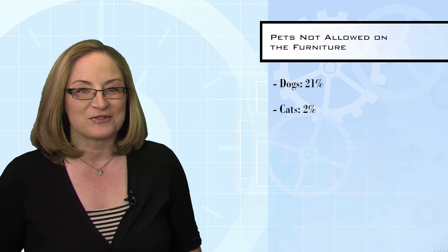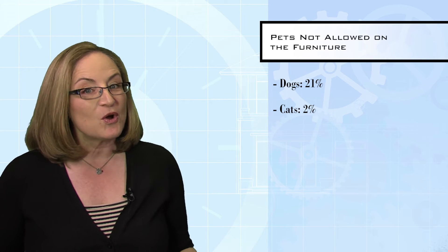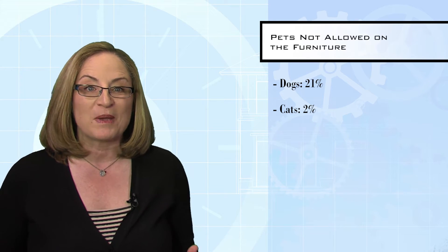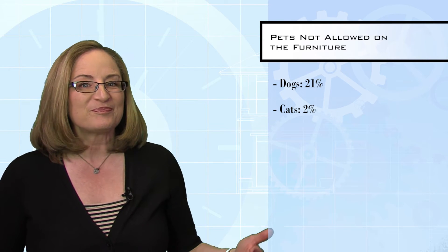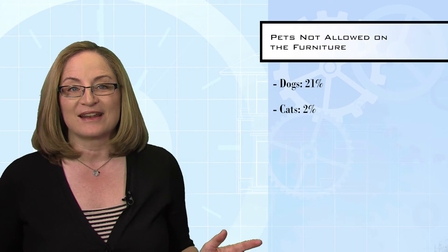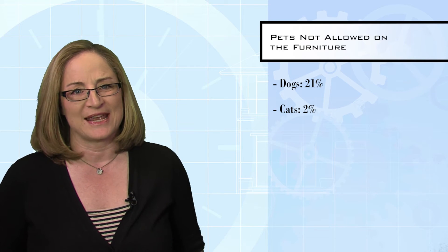21% of dog owners keep the dogs off the furniture, and apparently 2% of cat owners don't let their cats on the furniture either, which begs the question, how do you actually keep the cat off the furniture? Angus, who's in our office, has cats that climb all the way to the top of his bookshelf and like to play around with the statues he has up there.